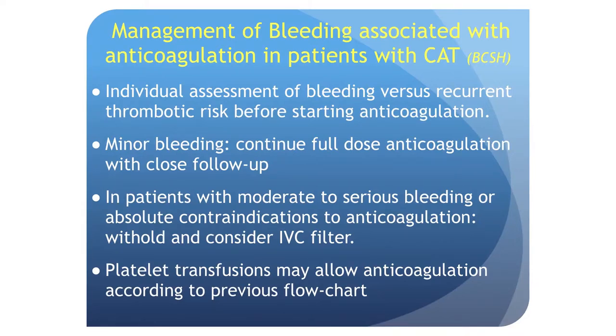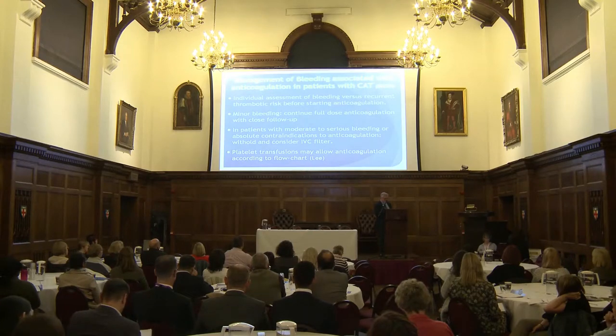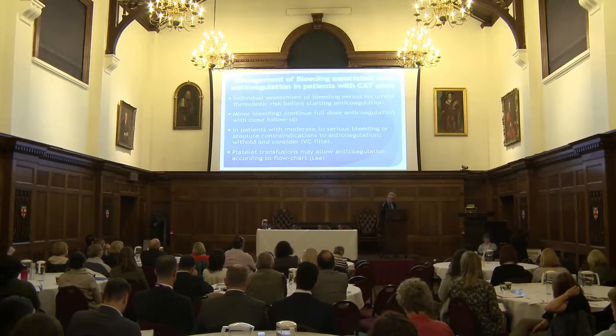Managing bleeding in association with cancer-associated thrombosis: this must be done on an individual patient basis. Individuals have to be assessed for bleeding versus recurrent thrombotic risks before considering anticoagulation. When there is minor bleeding, it is sensible to continue full-dose anticoagulation with careful follow-up. In patients with moderate to serious bleeding or absolute contraindications to anticoagulation, withhold and consider an IVC filter. Platelet transfusions may allow anticoagulation to continue, as already mentioned. This information is taken from the BCSH guidance from 2015.